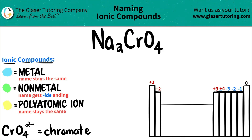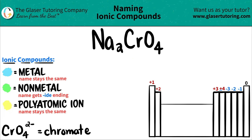Today we are going to be naming the ionic compound Na2CrO4. Here's a little trick: if you have a compound that has three or more different elements in it, you know that you're dealing with at least one polyatomic ion.